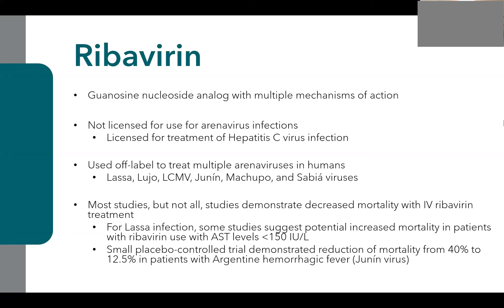However, there is some concern with Lassa virus — the most well-studied — that certain populations may not be appropriate for ribavirin therapy. Some studies suggest potential increased mortality in patients treated with ribavirin who have normal LFT levels, i.e., no evidence of liver damage. So ribavirin use in Lassa virus infection can be controversial. For other viruses such as Junin virus causing Argentine hemorrhagic fever, we have good data showing mortality reduction from 40% to 12.5%.